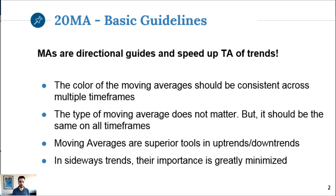The 20MA is the more important of the two. It trends and reacts to price a lot more - it's a lot more sensitive because it's the average of the last 20 candles rather than the last 200. It responds and moves a lot. In general, moving averages are directional guides that speed up technical analysis of trends.